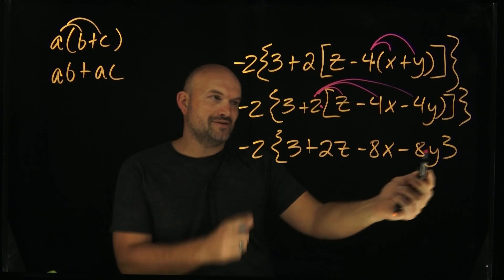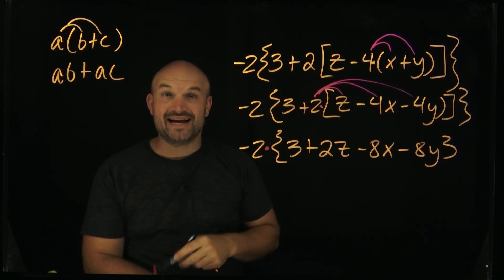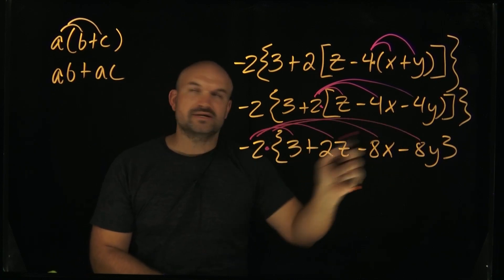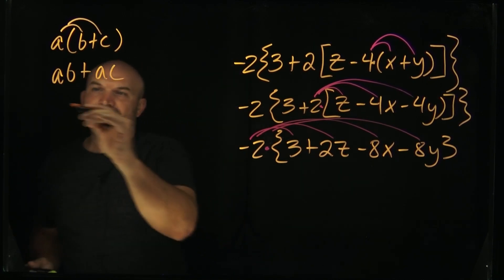So we're going to apply. We look outside this grouping symbol and recognize that I got multiplication by a negative two again. So now I'm going to distribute times each one of those. It doesn't matter if you have two terms or three terms. This distributive property is still going to remain the same.